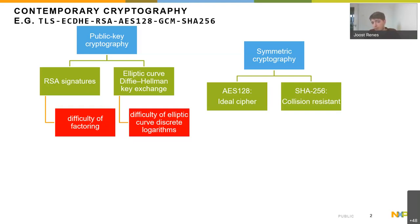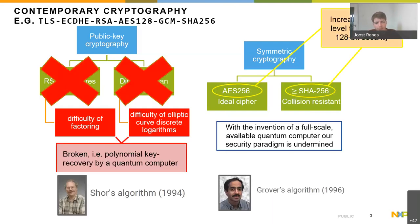Where does the term post-quantum come in? Basically, there's a looming threat of a quantum computer. Quantum computing is a domain into which many resources are being invested. Microsoft, Google, IBM are all trying to build a quantum computer, and some have succeeded in building small ones. If you can build a large quantum computer, you can run Shor's algorithm — invented in 1994 — which factors a product of two prime numbers or solves an elliptic curve discrete logarithm. Because these problems will no longer be hard, the crypto based on them will no longer be secure.